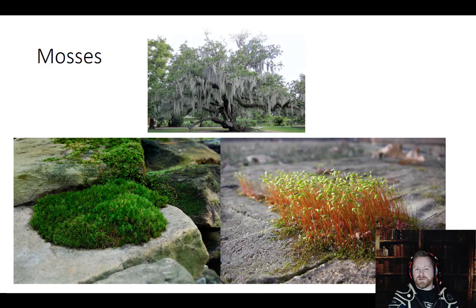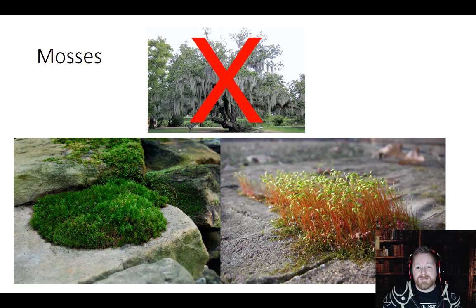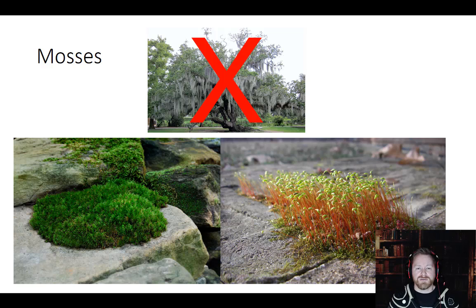There's another type of moss we have around here called Spanish moss. But Spanish moss is actually not a true moss at all — it's actually a flowering plant, closely related to the pineapple. Its scientific name is Tillandsia usneoides. We call it Spanish moss, but it's not actually a moss; it's a flowering plant, just with very, very tiny flowers.